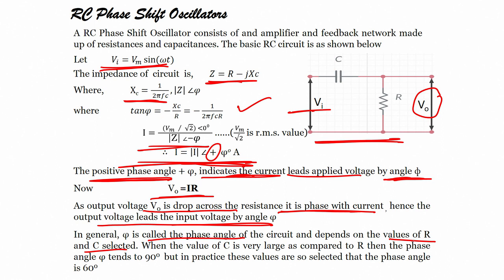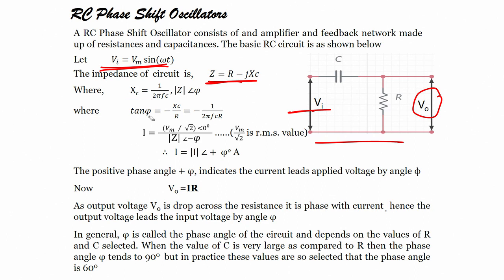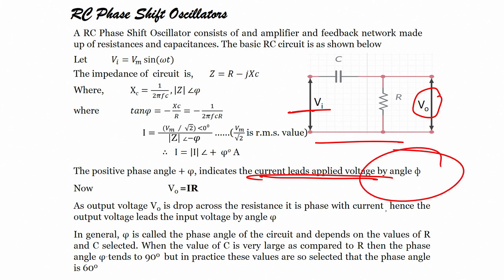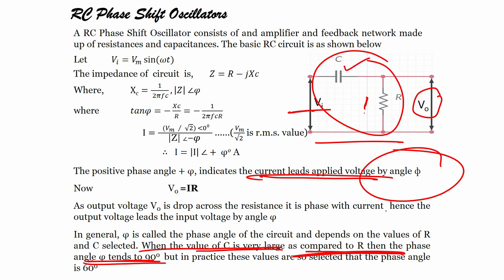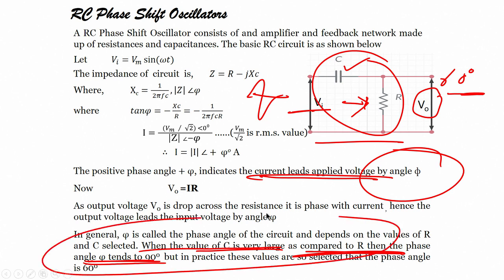What we understand from this is that since the current is leading the applied voltage by angle φ, when C is very large compared to R, the phase angle tends to 90 degrees. But in practice, the values are selected such that one RC section will provide a phase shift of 60 degrees.